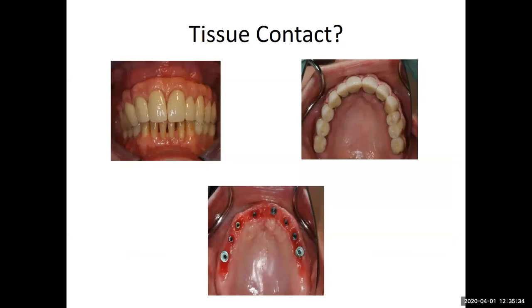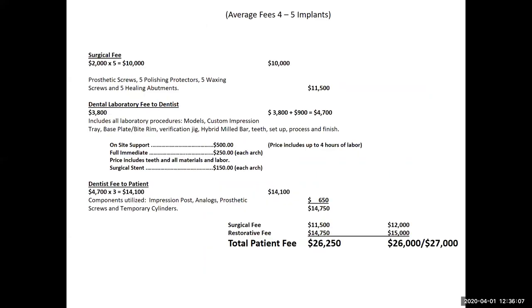Regarding tissue contact: I try to leave about a millimeter of space between the acrylic and the tissue on these hybrid cases. This particular case shows an allergic reaction the patient had to acrylic tissue contact — we have to be cognizant of that. On average it's about a millimeter of space between the acrylic and the gingiva. And as far as the income opportunity — the average total patient fee for these types of cases is about $26,000 to $27,000, taking into consideration the surgical fee and restorative fee. That's a nice profit, and we'd like to get a number of these cases regularly.